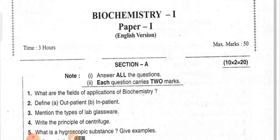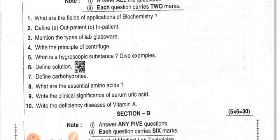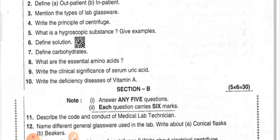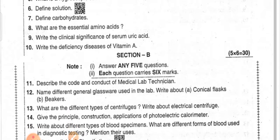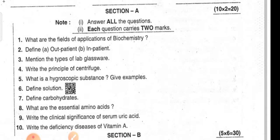Biochemistry Paper One — Section A questions for MLT first year, for both Telugu and English medium students: What are the fields of applications of biochemistry? Define outpatient and inpatient. Mention the types of lab glassware. Write the principles of the centrifuge. What is a hygroscopic substance — give examples. Define solution. Define carbohydrates. What are the essential amino acids? Write the clinical significance of serum uric acid. Write the deficiency disease of Vitamin A.